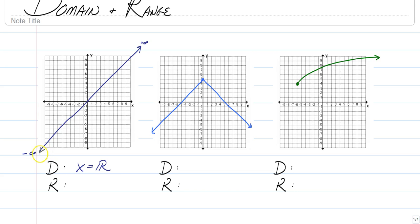So it's also going down forever, and it's also going up forever. So when it goes down and up forever, y is also equal to all real numbers. And again, that's the all real number symbol. It's basically the letter R with two vertical lines. So that's domain and range of the first example.